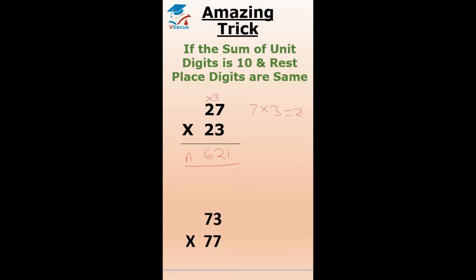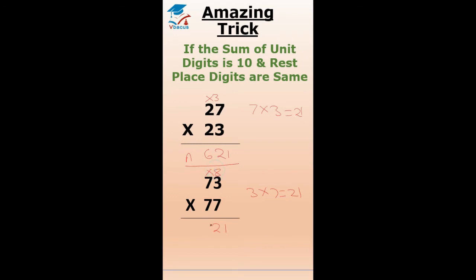Let us see one more example: 73 times 77. Multiply the unit digits: 3 into 7 is 21. Write 21, and multiply 7 to its next number, that is 8. So 7 times 8 is 56. The answer is 5621.